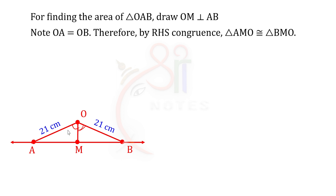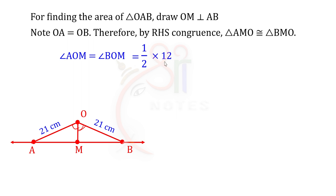Angles AOM and BOM are equal. Since the total angle AOB is 120 degrees, it is divided into 2 equal parts. So angle AOM equals angle BOM equals 1 by 2 into 120 degrees, which is 60 degrees.